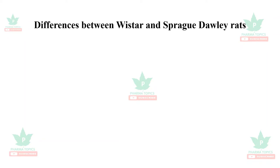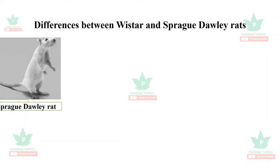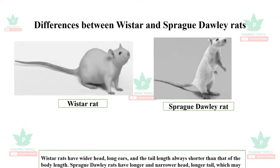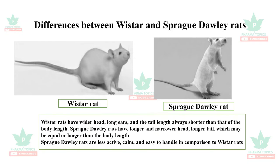Let us see the differences between Wistar and Sprague-Dawley rats. Wistar rats have a wider head, long ears, and the tail length is always shorter than the body length. In contrast, Sprague-Dawley rats have a longer and narrower head, with a longer tail that may be equal to or longer than the body length. Sprague-Dawley rats are less active, calm, and easier to handle compared to Wistar rats.